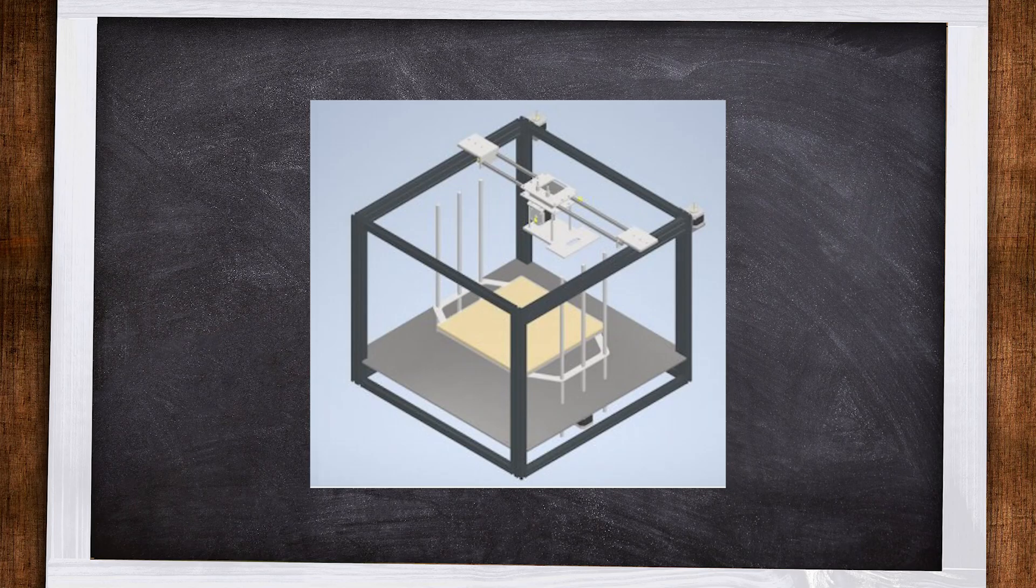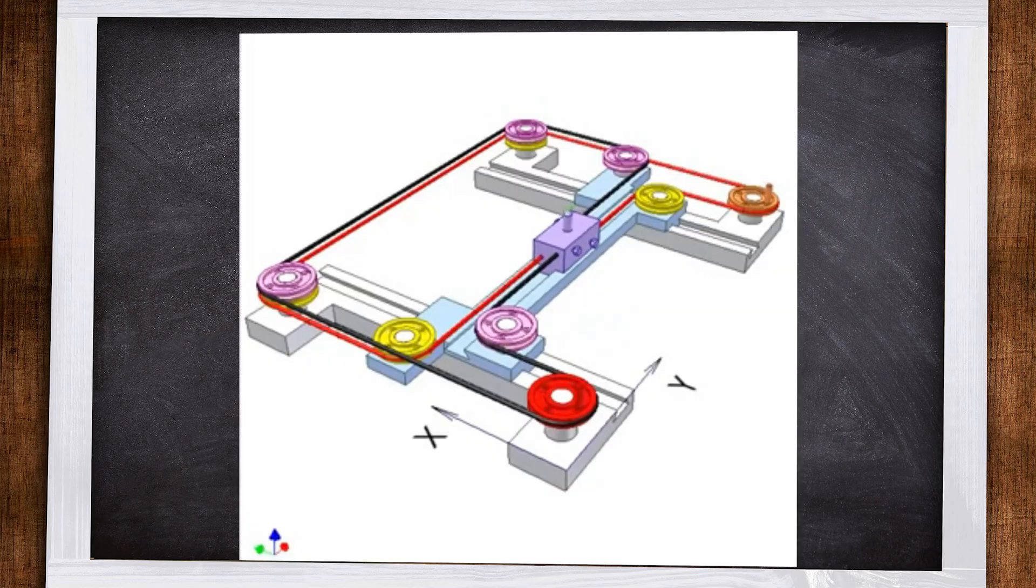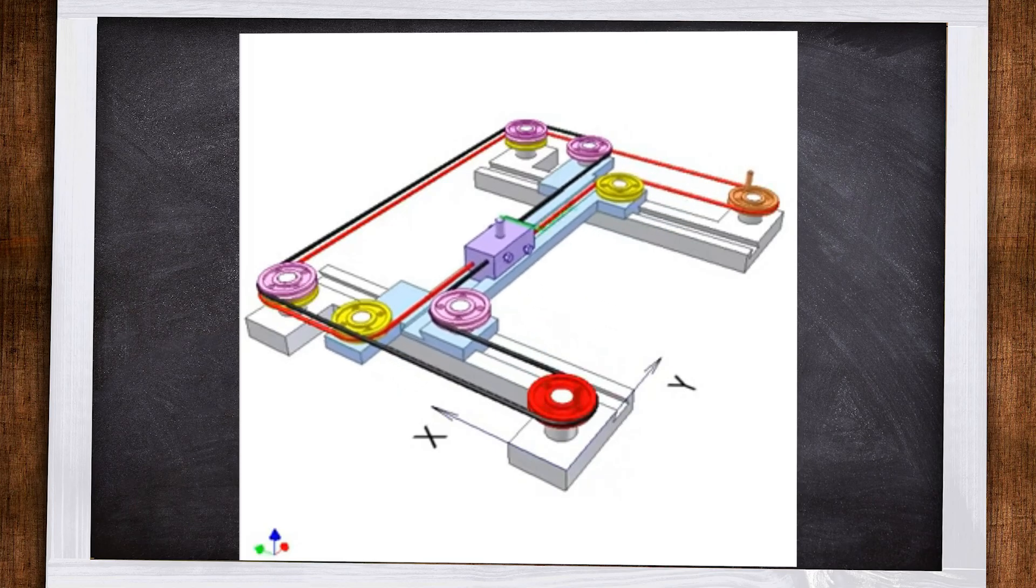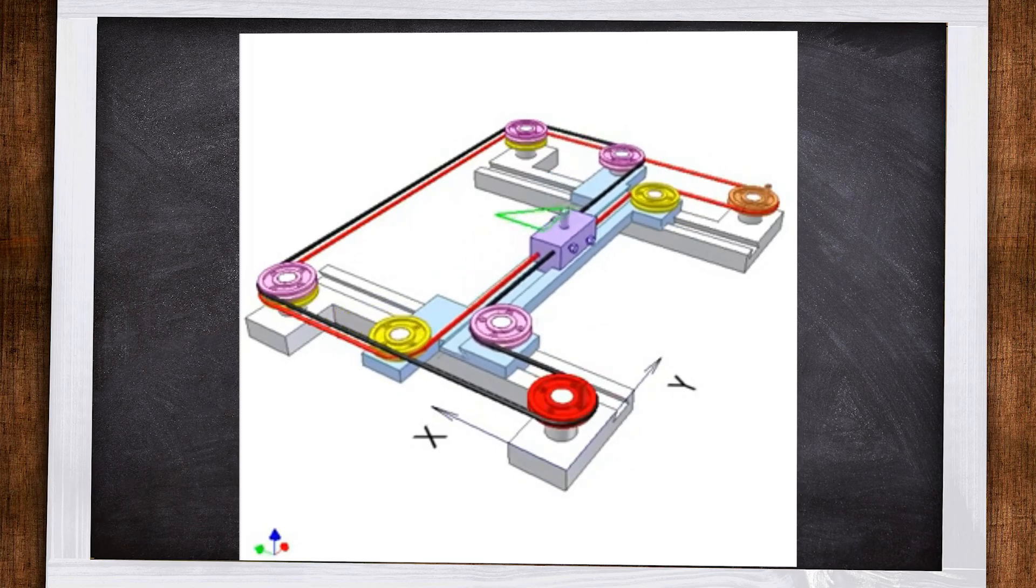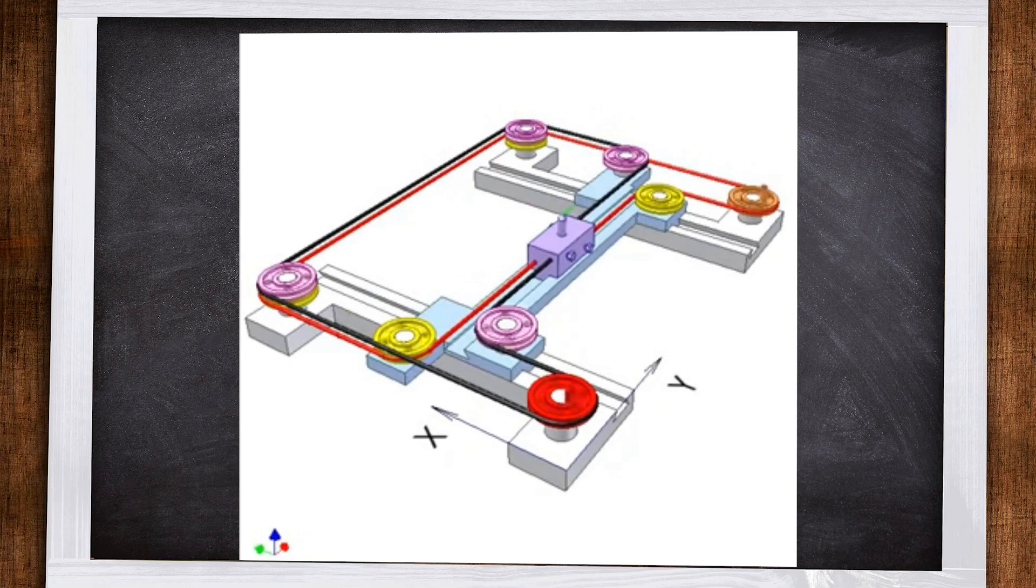The XYZ motion features an H-Bot, core XY design, as well as a two-screw, four-slider Z motion apparatus. This allows the printer to move precisely in each dimension.